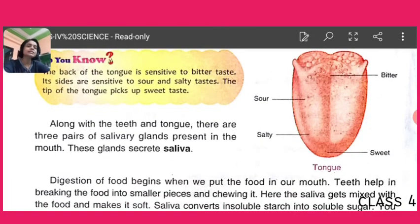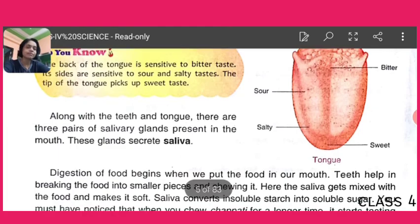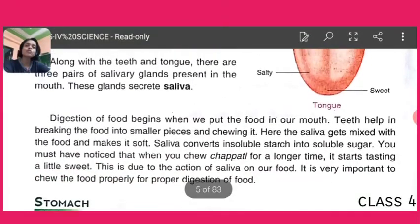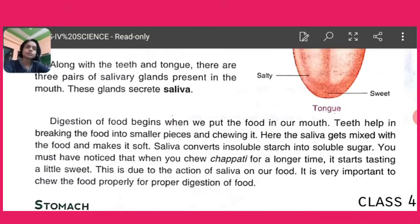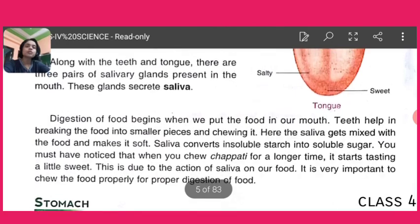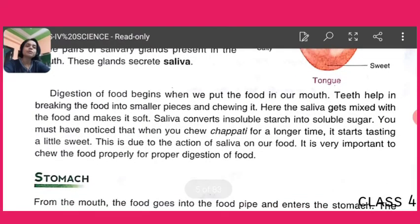Along with the teeth and tongue, there are three pairs of salivary glands present in the mouth, and these glands secrete saliva. Digestion of food begins when we put food in our mouth — the teeth help in breaking food into smaller pieces and chewing it. Saliva mixes with the food and makes it soft. Saliva converts insoluble starch into soluble sugar. You must have noticed that when you chew chapati for a longer time, it starts tasting a little sweet — this is due to the action of saliva. It is very important to chew food properly for proper digestion.